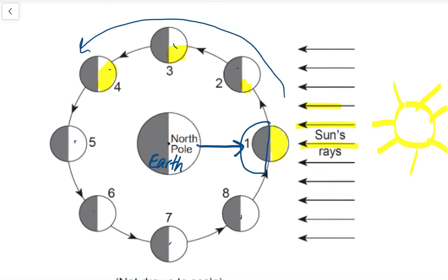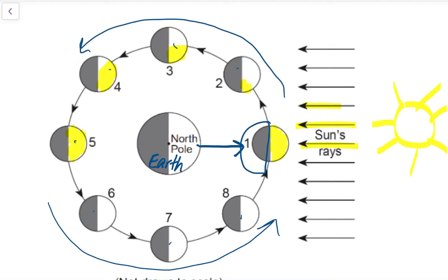And then if we keep coming around to position five, when the moon is on the opposite side of the earth from the sun, the lit up portion of the moon is totally facing the earth. So here at position five is where we would see a full moon. Then the moon keeps moving around in its orbit and the light starts to go away until it returns to position one, where we see a new moon — where the entire moon is dark from earth and we cannot see the moon at all.